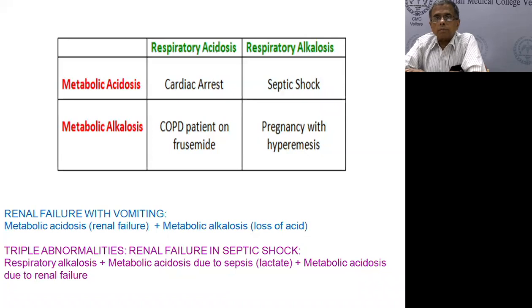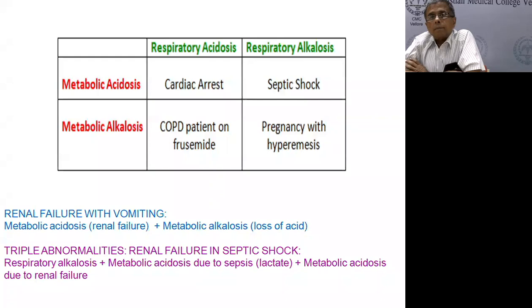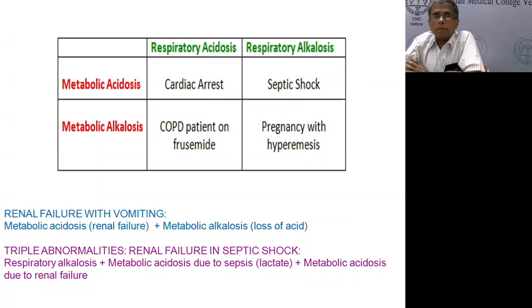Similarly, septic shock is metabolic acidosis due to perfusion problems and respiratory alkalosis because cytokines drive the respiratory center. Metabolic alkalosis is present in a patient on furosemide who also has chronic COPD with respiratory acidosis. Pregnancy patients have respiratory alkalosis physiologically because progesterone drives the respiratory center; if hyperemesis occurs on top, you lose acid from the stomach giving metabolic alkalosis. You can also have combinations of metabolic acidosis and metabolic alkalosis, and even triple abnormalities.